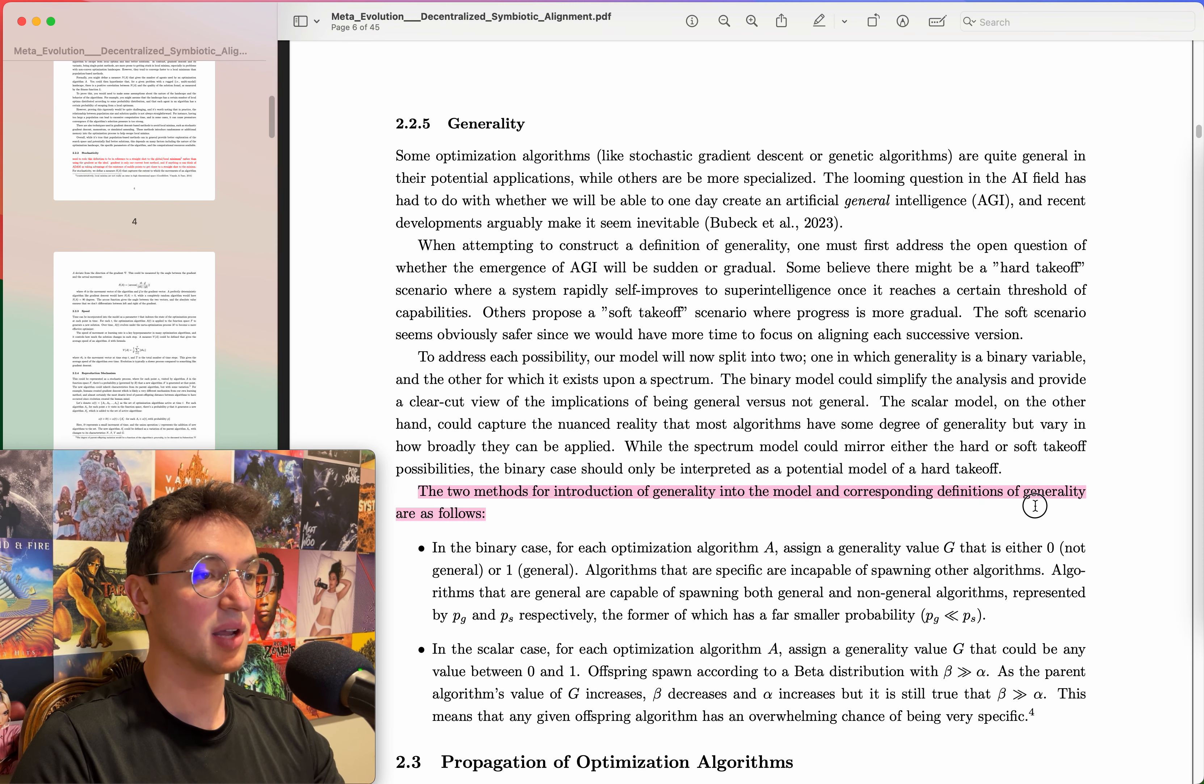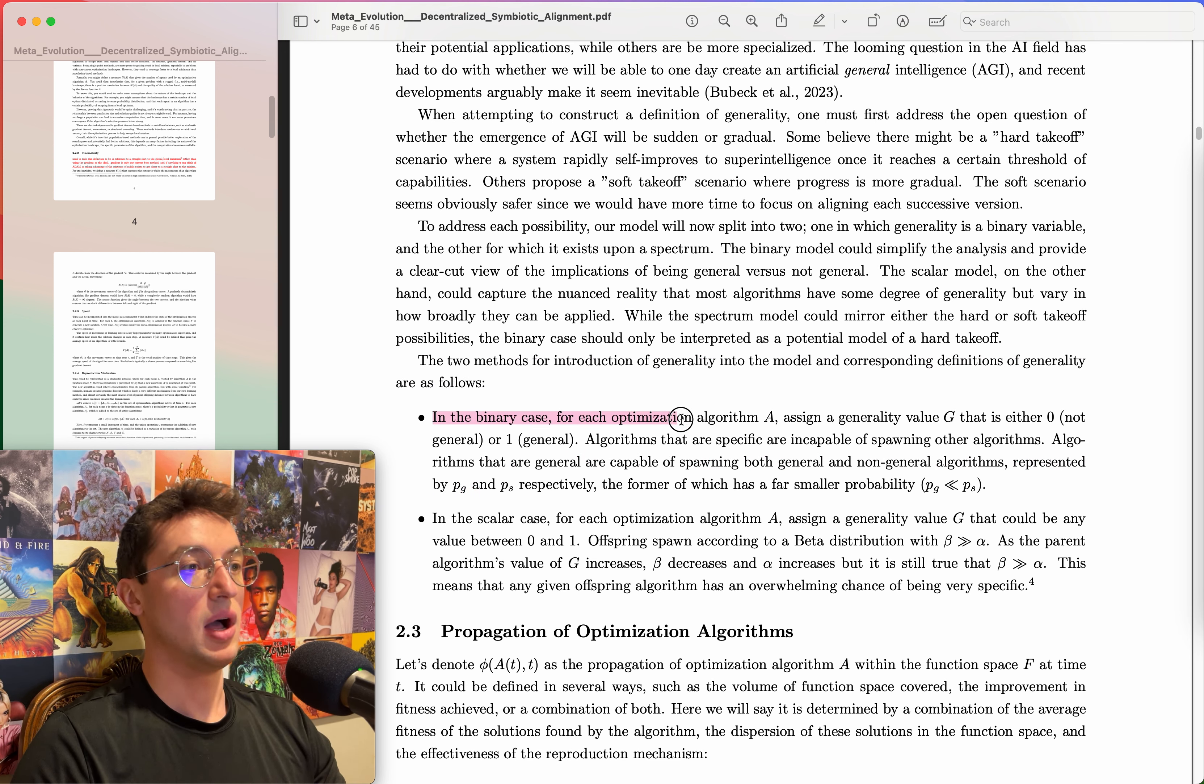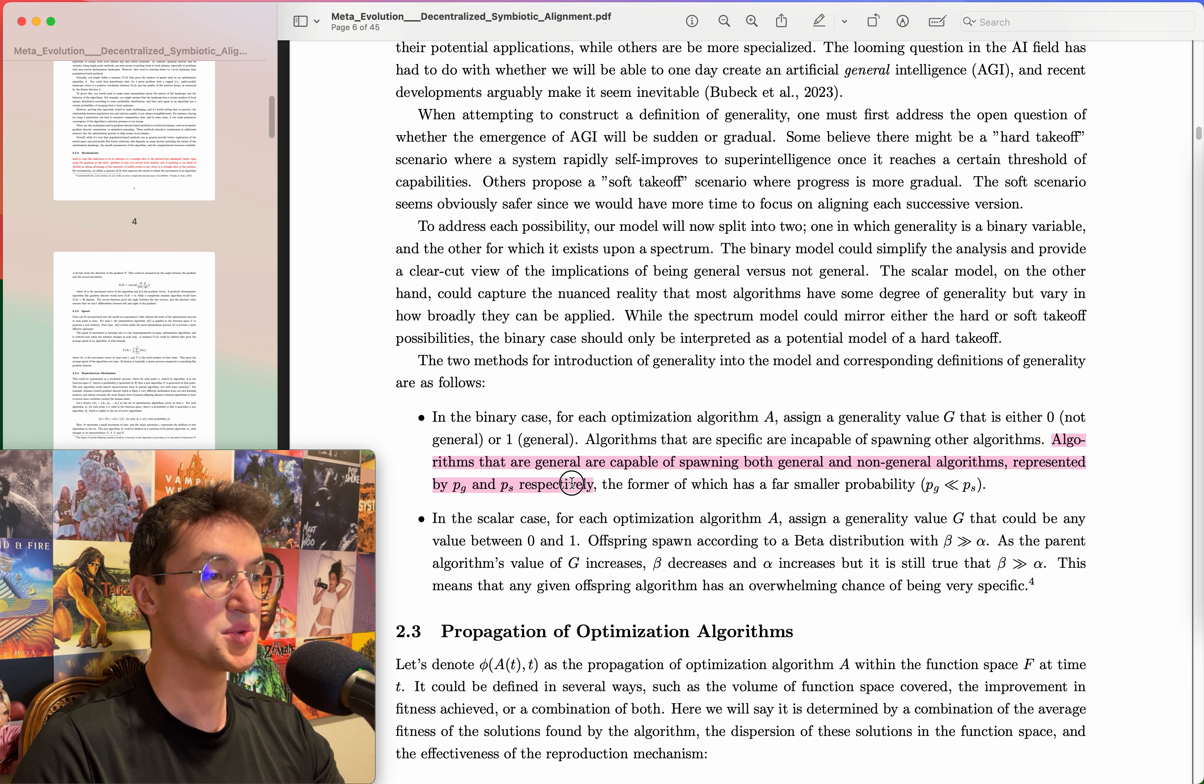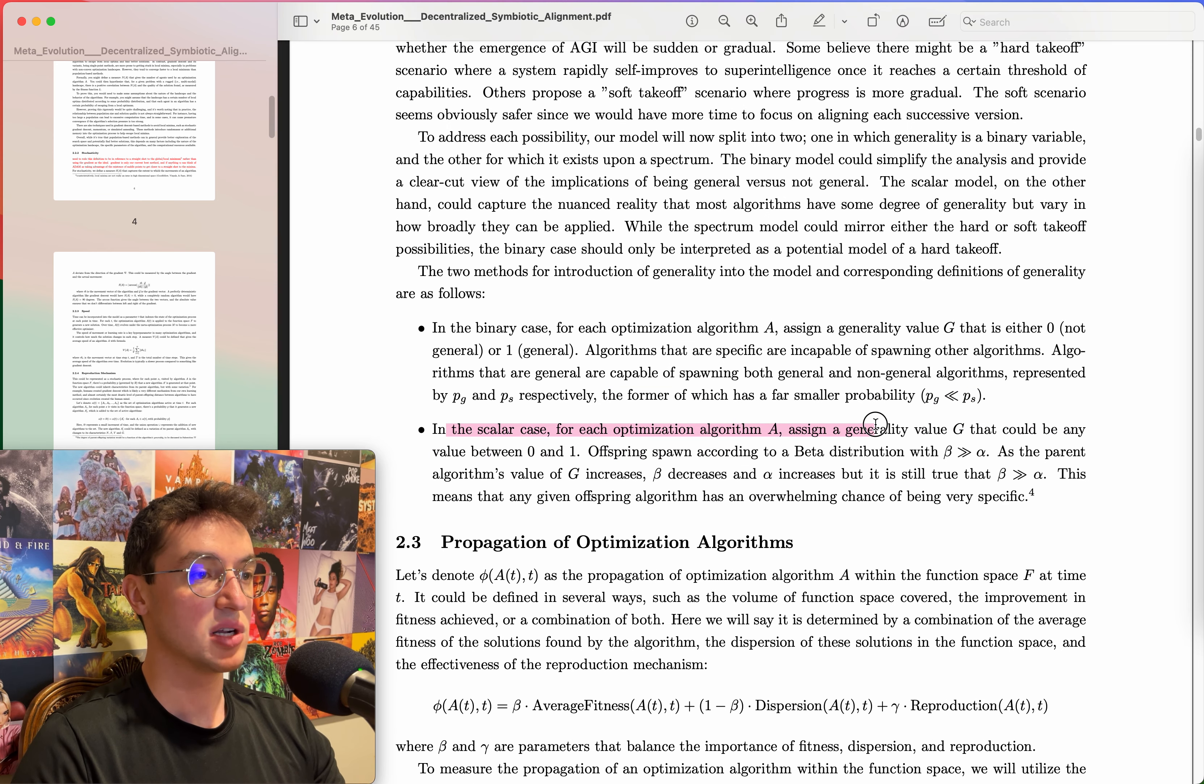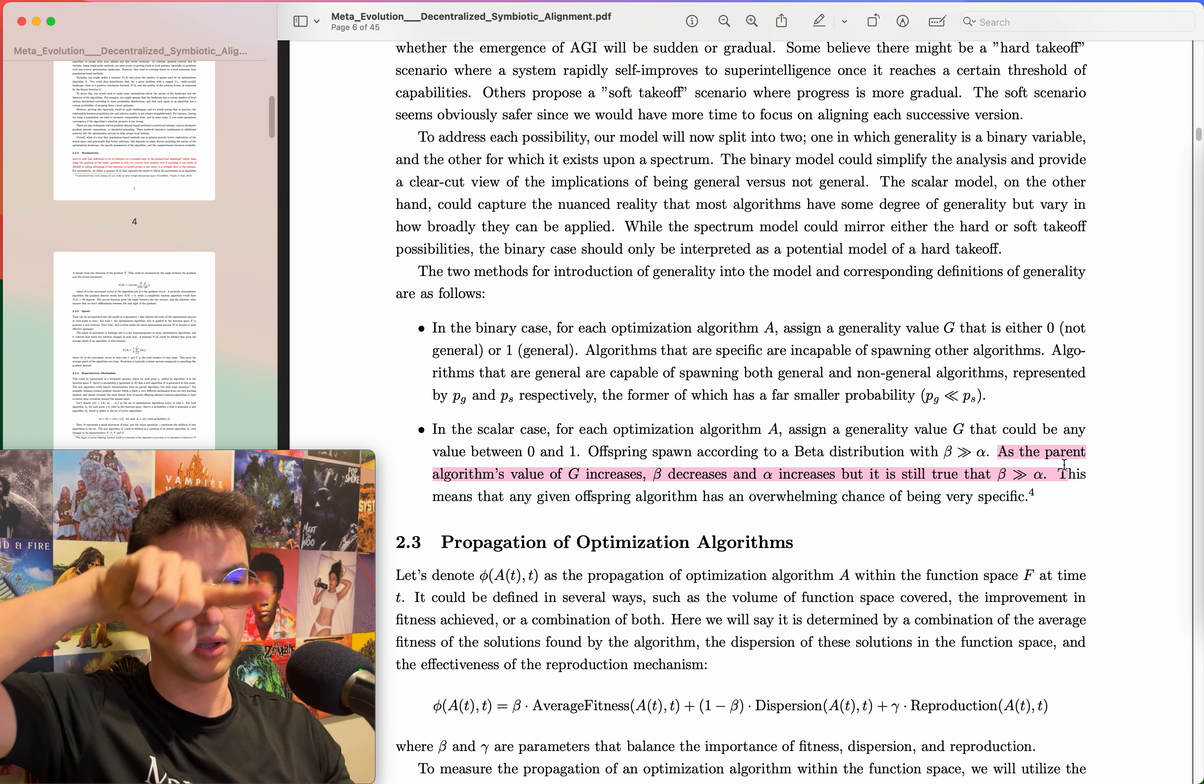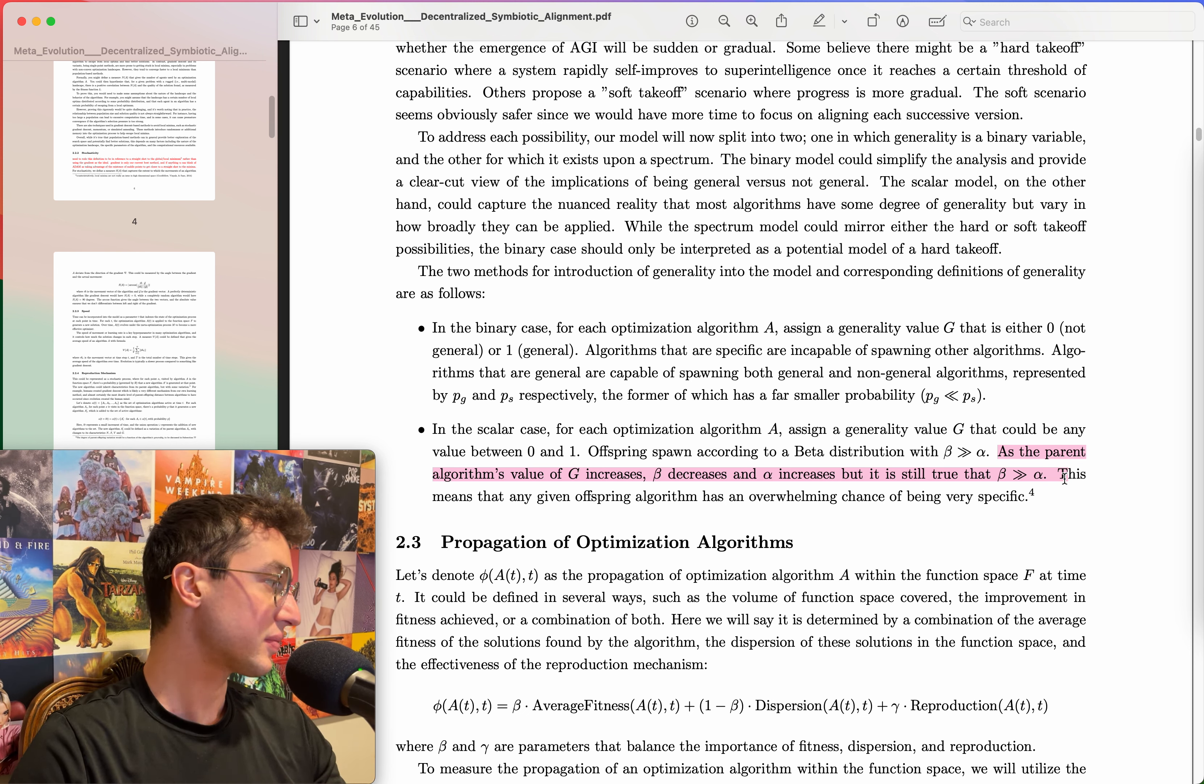The soft scenario seems obviously safer since we would have more time to focus on aligning each successive version. To address each possibility our model will now split into two: one in which generality is a binary variable and the other for which it exists upon a spectrum. The binary model could simplify the analysis and provide a clear-cut view of the implications of being general versus not general. The scalar model on the other hand could capture the nuanced reality that most algorithms have some degree of generality but vary in how broadly they can be applied. In the binary case, for each algorithm A assign a generality value g that is either zero not general or one general. Algorithms that are not general are incapable of spawning other algorithms. Algorithms that are general are capable of spawning both general and non-general algorithms. In the scalar case, for each algorithm A assign a generality value g that could be any value between zero and one.